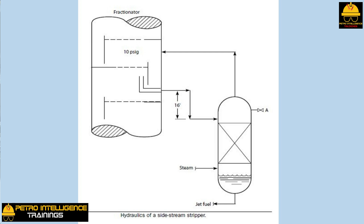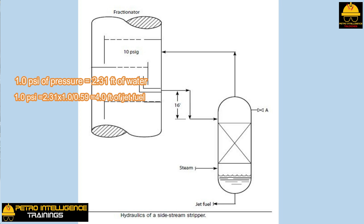Introduction of a normal amount of steam resulted in a loss of liquid level in the bottom of the stripper. The pressure at point A in the picture was 13 psig, meaning the pressure drop in the vapor line from the stripper back to the fractionator was 3 psig. For the unstripped jet fuel to flow out of the lower-pressure fractionator and into the higher-pressure stripper, it had to overcome this 3 psig pressure difference. The 16-foot elevation difference between the draw-off nozzle on the fractionator and the stripper inlet provided the necessary liquid head driving force. Assuming the specific gravity of the unstripped jet fuel was 0.59, and noting that for water (specific gravity 1.0), 1.0 psi equals 2.31 feet, the pressure head of a column of jet fuel equal to 1 psig is 2.31 times 1.0 divided by 0.59, equal to 4.0 feet of jet fuel.